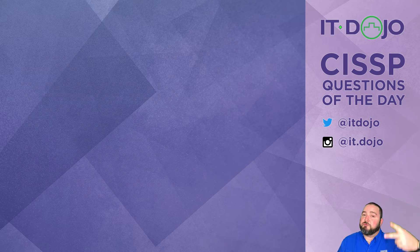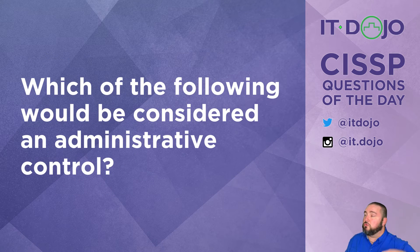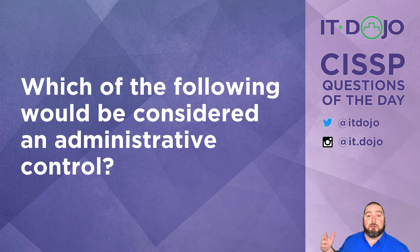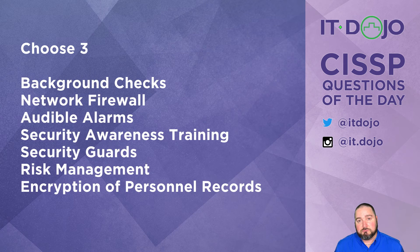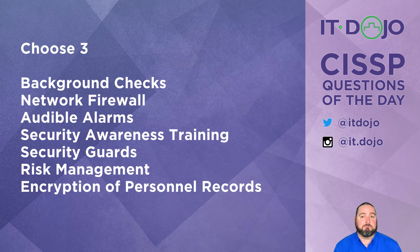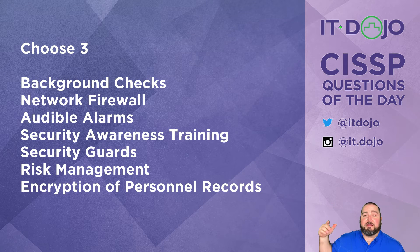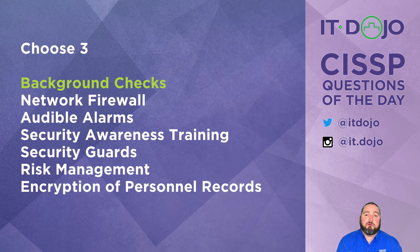Okay, let's move on to question number two. Pretty straightforward: of the choices listed, which are considered administrative controls? Click pause if you need to, then click play and we'll talk it through. First item on the list: background checks — absolutely, those are an administrative control.